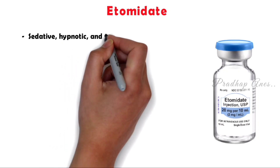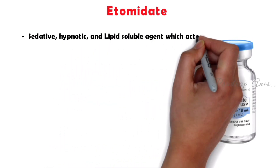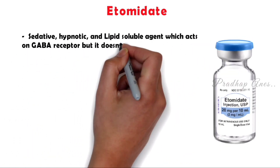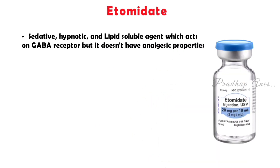Etomidate is a sedative, hypnotic, and lipid-soluble agent which acts on the GABA receptor, but it doesn't have analgesic properties.